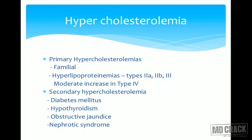Nephrotic syndrome is another important cause of hypercholesterolemia. In nephrotic syndrome, albumin is lost in the urine. The liver is stimulated by unknown mechanisms to synthesize albumin, and in doing so it also starts de novo synthesis of cholesterol, which is exported out via VLDL. Hence, in nephrotic syndrome we also get hypercholesterolemia.